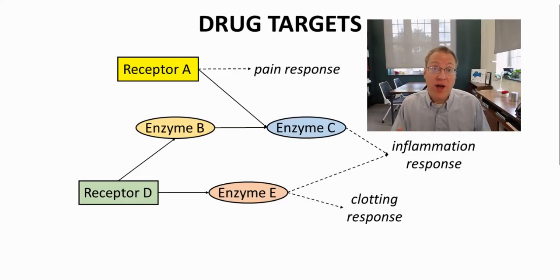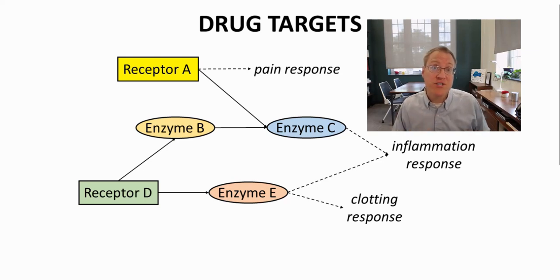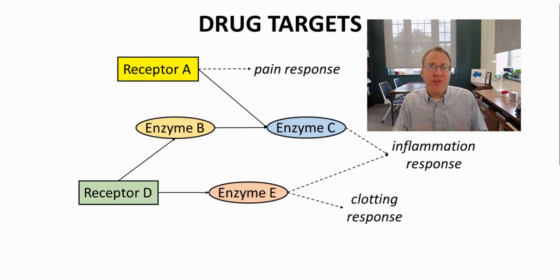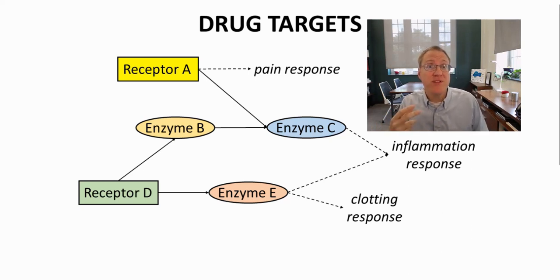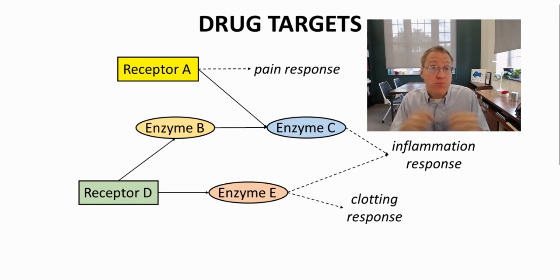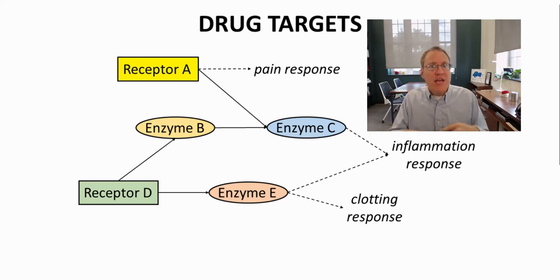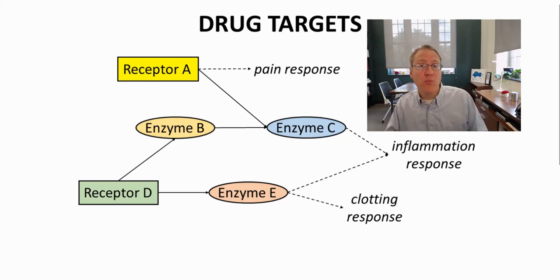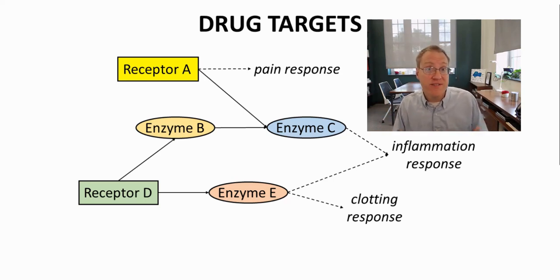Once we have identified our unmet medical need, it's now time to begin the drug discovery process. This beginning starts with unraveling the biological pathways that are associated with the disease. Biological pathways are managed by proteins, for the most part enzymes and receptors. In theory, if you can block the action of an enzyme or receptor along a pathway, you can potentially have a therapeutic effect on a disease.